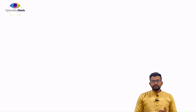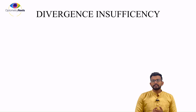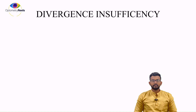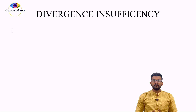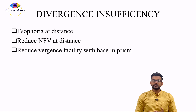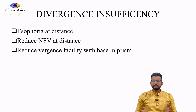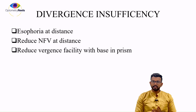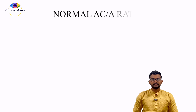Now we are going to talk about divergence insufficiency. Obviously we will be talking about the phoria for distance. The patient will be having a low AC/A ratio. For distance, the patient will have esophoria and all base-in difficulties, which means we are having low negative fusional vergences. In vergence facility there will be low values for these tests, because there will be a problem for the patient having divergence. The tip for remembering: patient will have esophoria for distance and base-in difficulties.